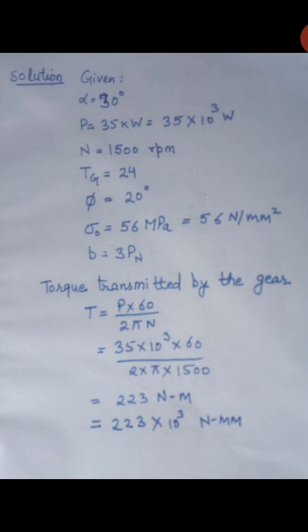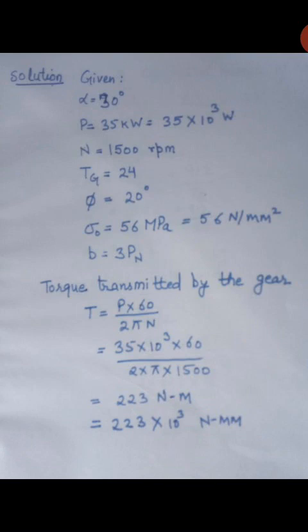We will first calculate the torque transmitted by the gear. It can be calculated by the equation T equal to P into 60 by 2 pi N. P is the power and N is the rpm — these values are known to us. Putting in the values: P equal to 35 into 10 raised to the power 3 and N equal to 1500 rpm, we get the value of torque equal to 223 Newton meter, which is equal to 223 into 10 raised to the power 3 Newton mm.